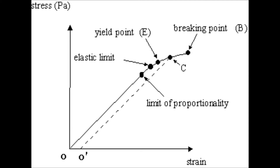If you were to remove the mass it would return down to zero but remain permanently extended. The breaking point is when you have a brittle material — it will suddenly fracture because the material doesn't deform plastically.